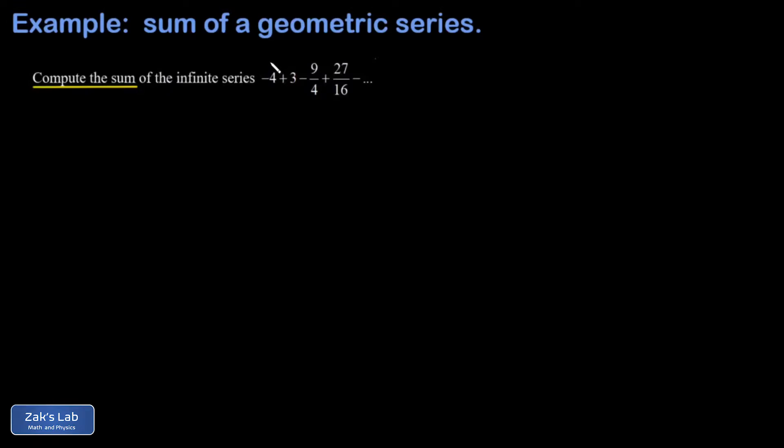So what we look for is a common ratio. Am I multiplying by the same thing at each step to generate the successive terms of the series? How would I get a 3 from a negative 4? Well, I could get that by multiplying by negative 3 fourths.